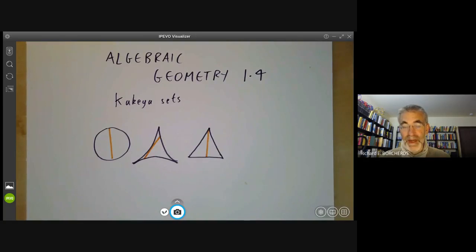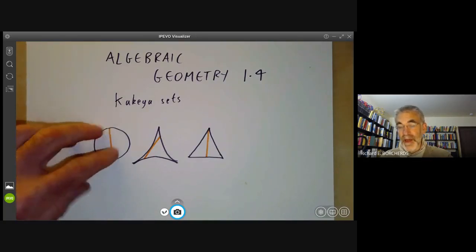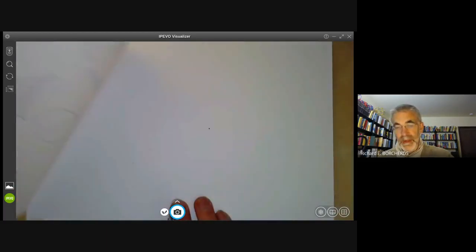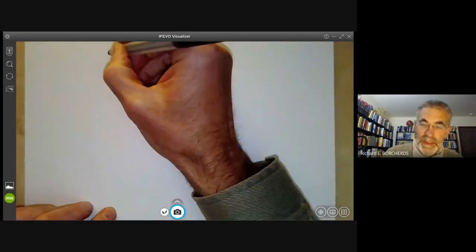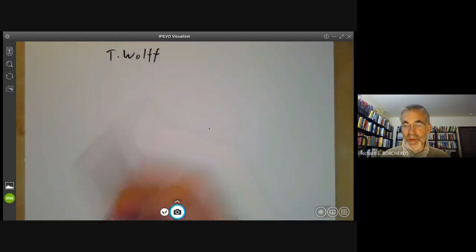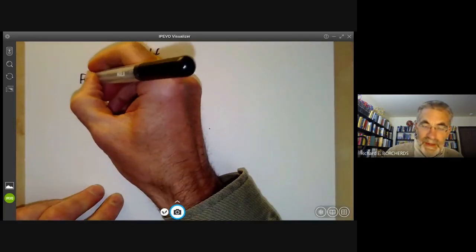A slight variation of the definition of a Kakiya set says that it's just a set containing a unit line in every direction, whether or not you can actually turn the line from one direction to another direction. So Kakiya sets turn out to be important in high dimensional harmonic analysis. And one harmonic analyst called Tom Wolfe suggested a finite field analogue of the Kakiya set. It's not quite the same as the two novelists called Thomas Wolfe because his name is spelt slightly differently with two F's at the end.